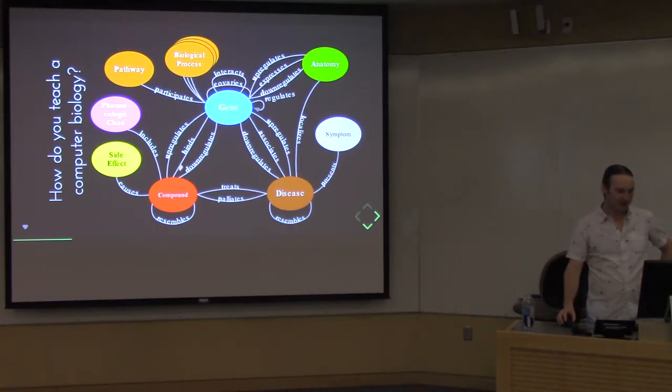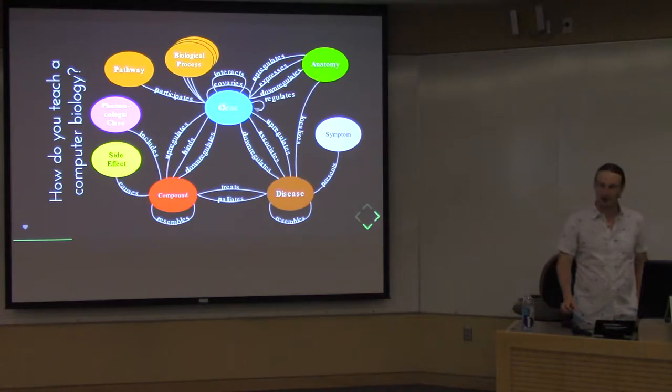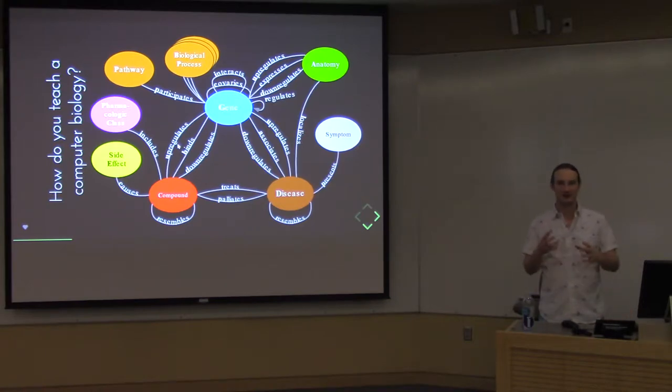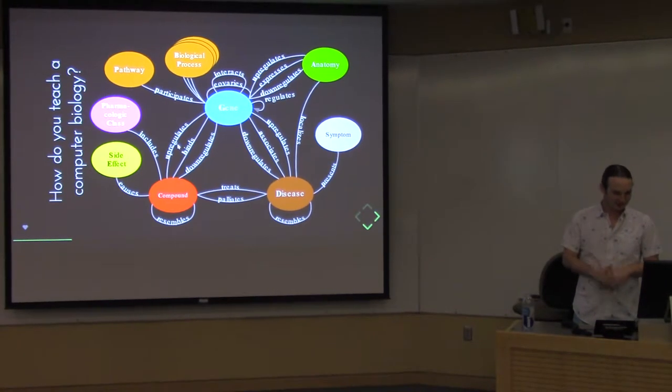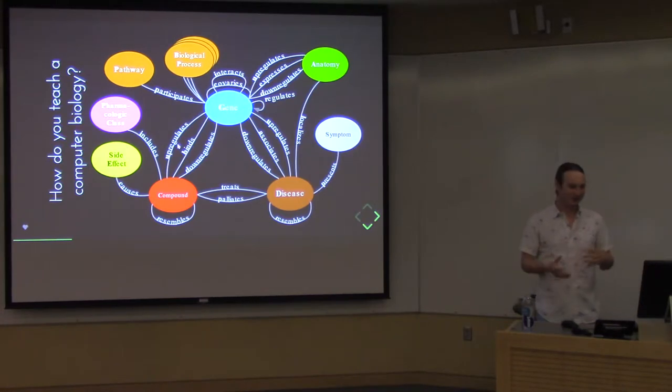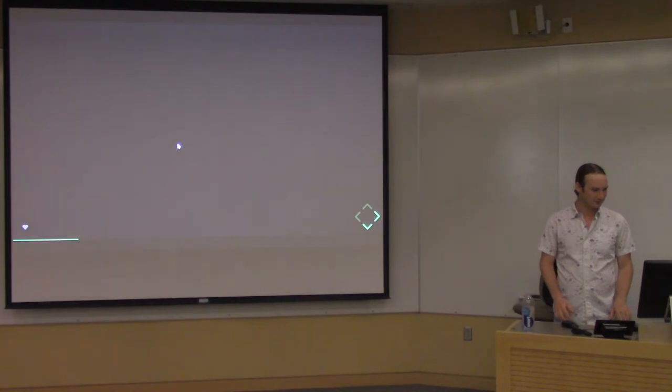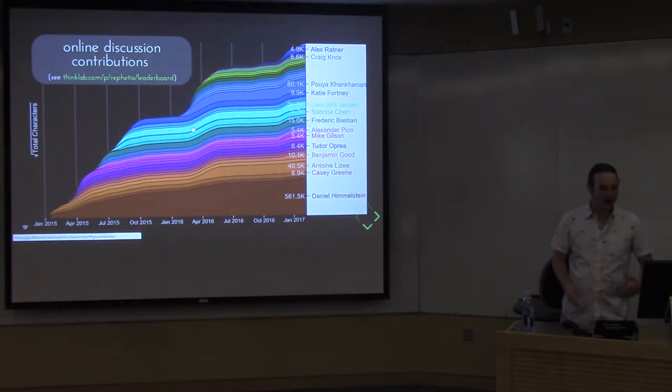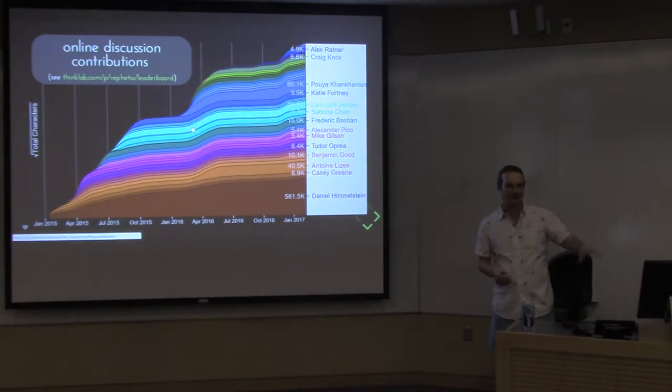Here's the layout of the hetnet that we designed during my PhD. This is the graph of types showing what types of nodes there are and how those types of nodes can be connected. For example, we have compounds, small molecule compounds like things you would get from a pharmacy. We have diseases. You can imagine different types of connections between compounds and diseases. For example, a compound can treat a disease, or a compound can palliate a disease, which means it addresses the symptoms but maybe not the underlying biology.